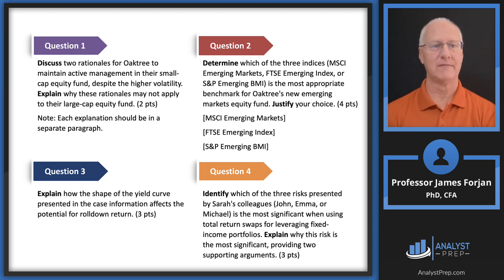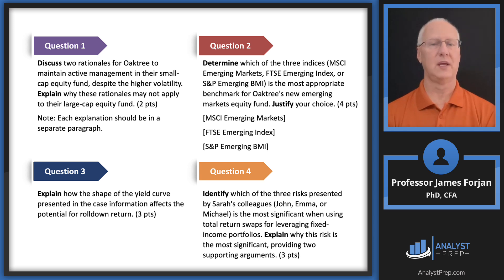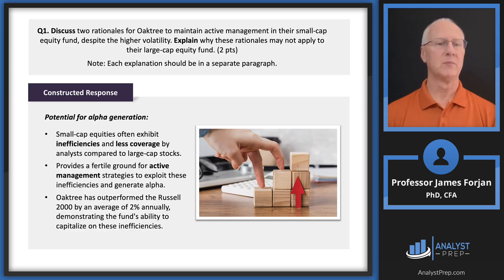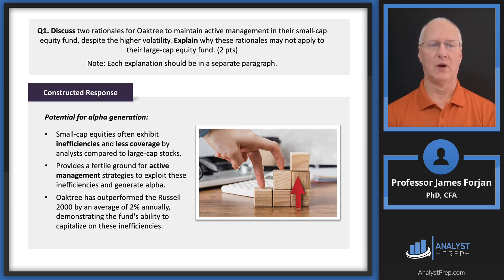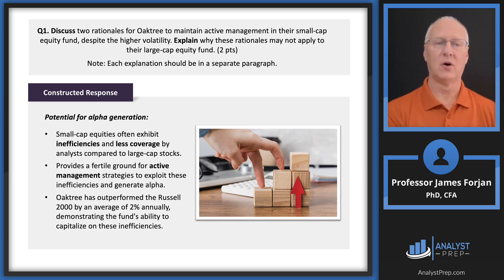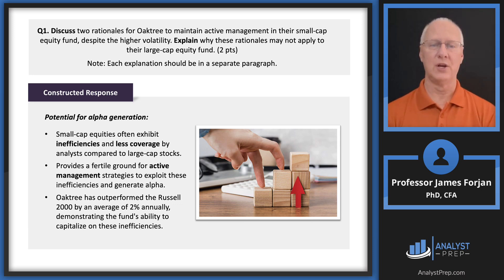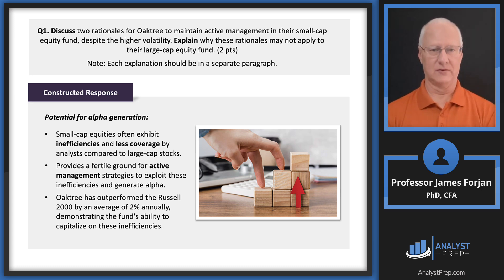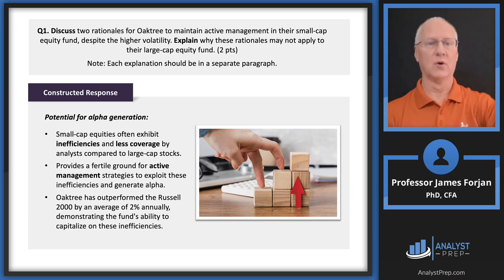Question one asks for two rationales for Oak Tree to maintain active management despite the higher volatility. This is the trade-off. In equities, we employ a mix of active management strategies. There are comments about consistently underperforming the S&P 500 benchmark — and that raises the question of whether it's even the appropriate benchmark. The S&P 500 is appropriate for many portfolios, but maybe not this one focused on small caps.